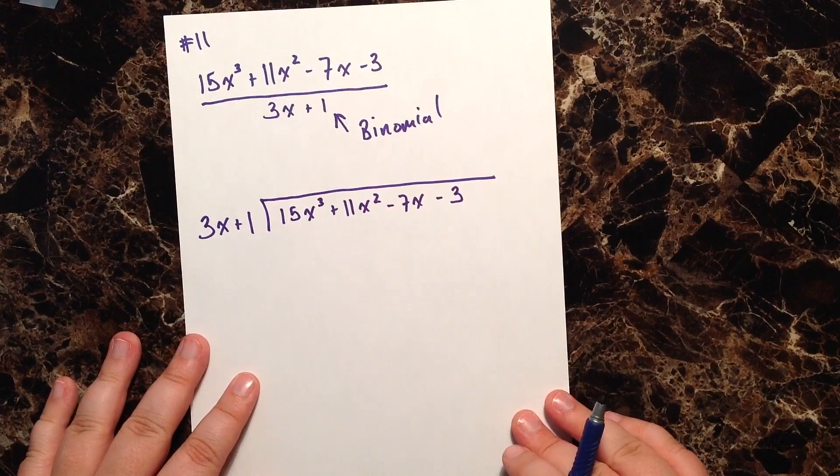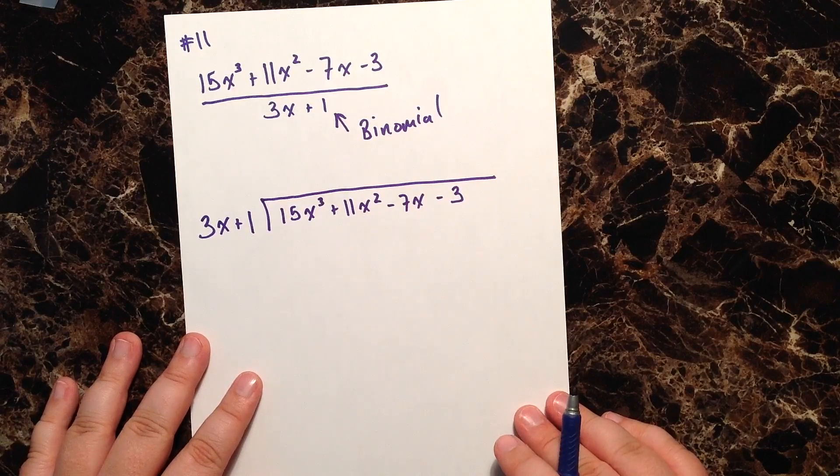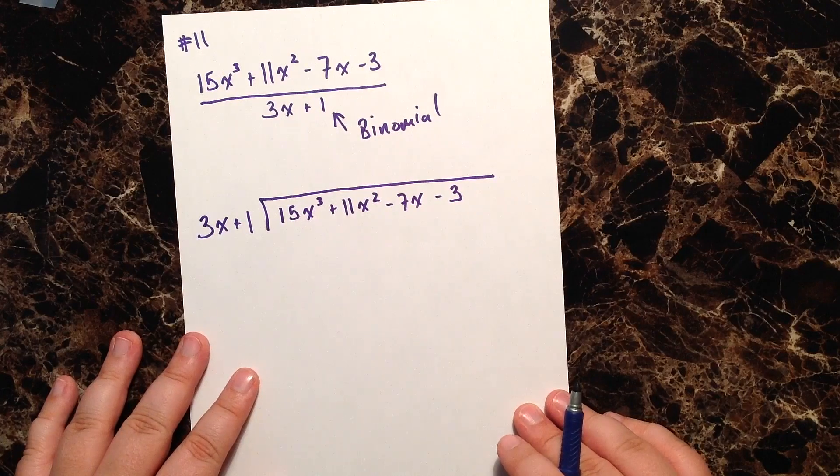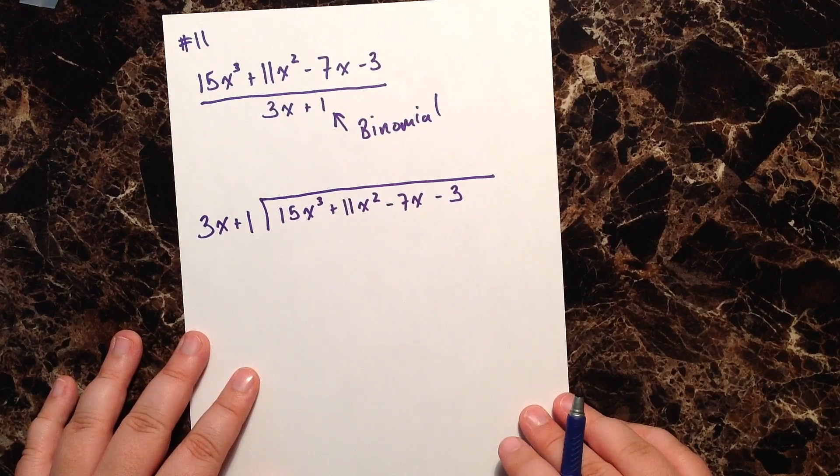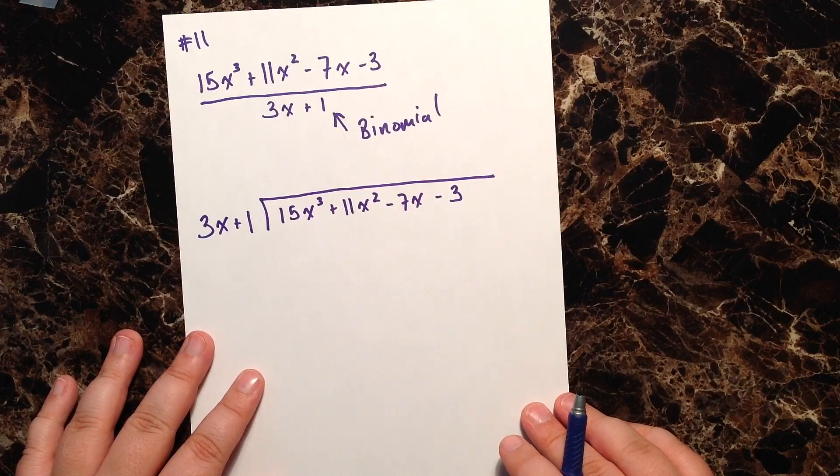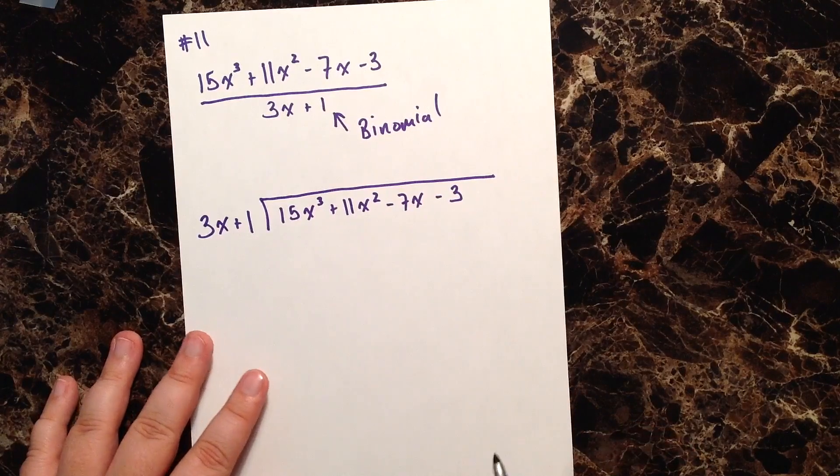Now the first thing that we want to look for when we are using long division is we want to make sure that our degrees are in descending order and that we go from our highest all the way down to zero without skipping any. If we have skipped one, then we need to make sure that we fill it in.